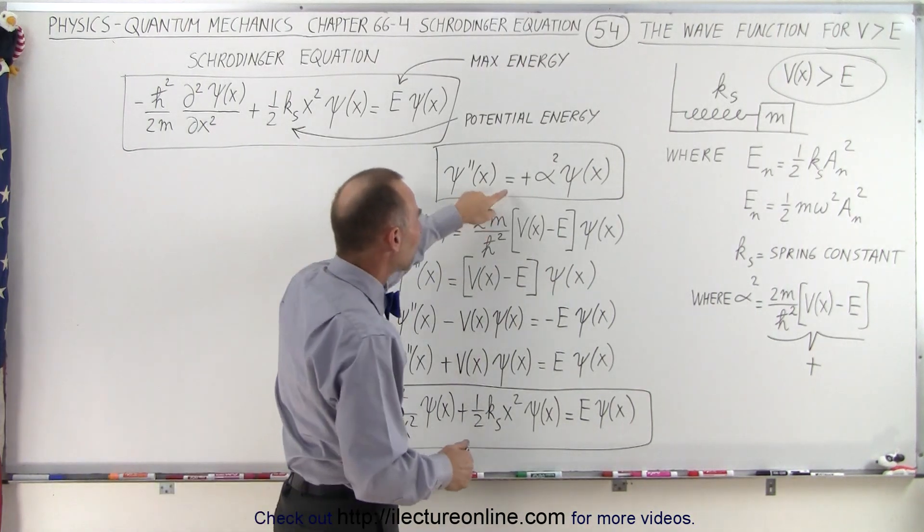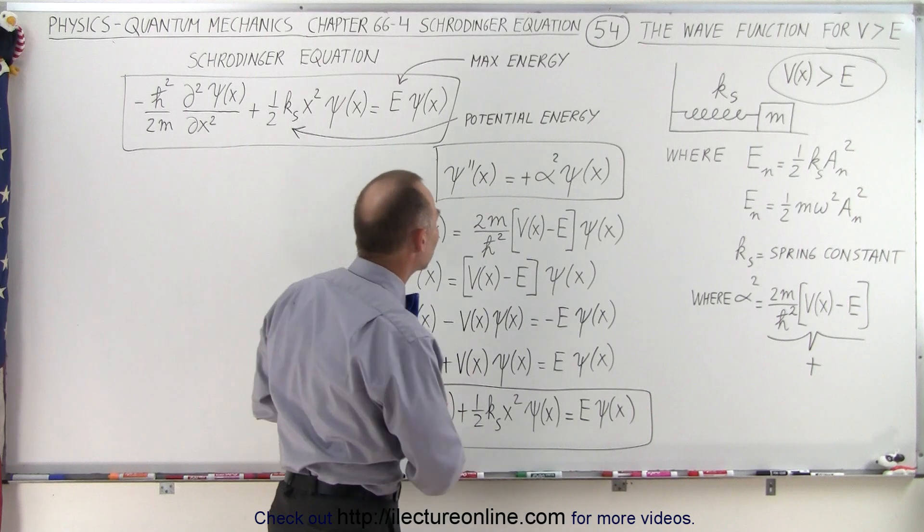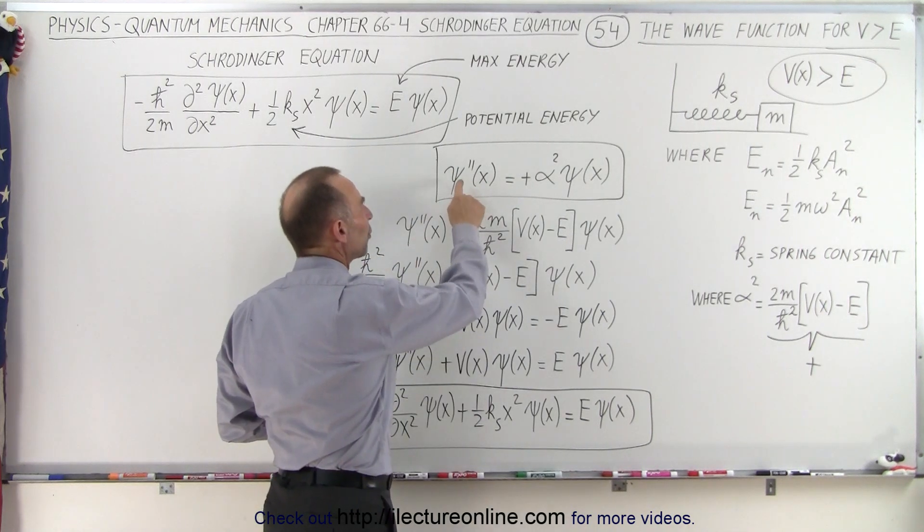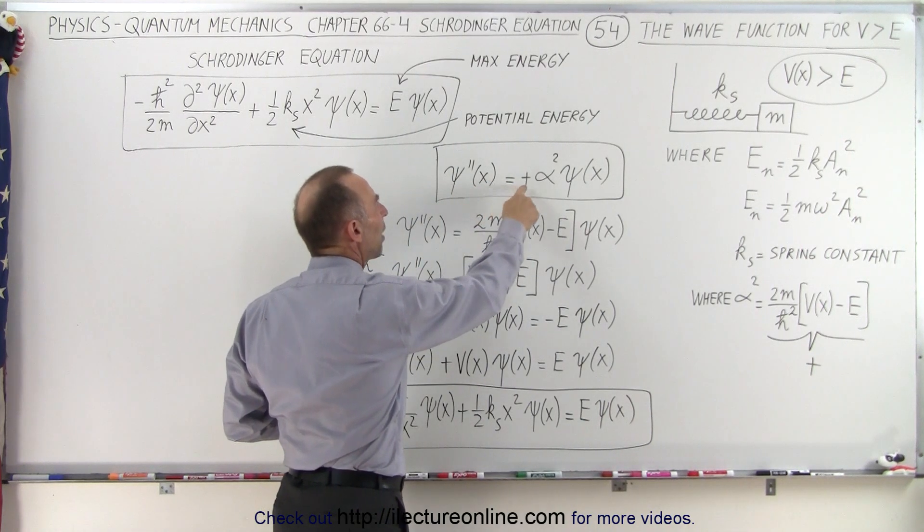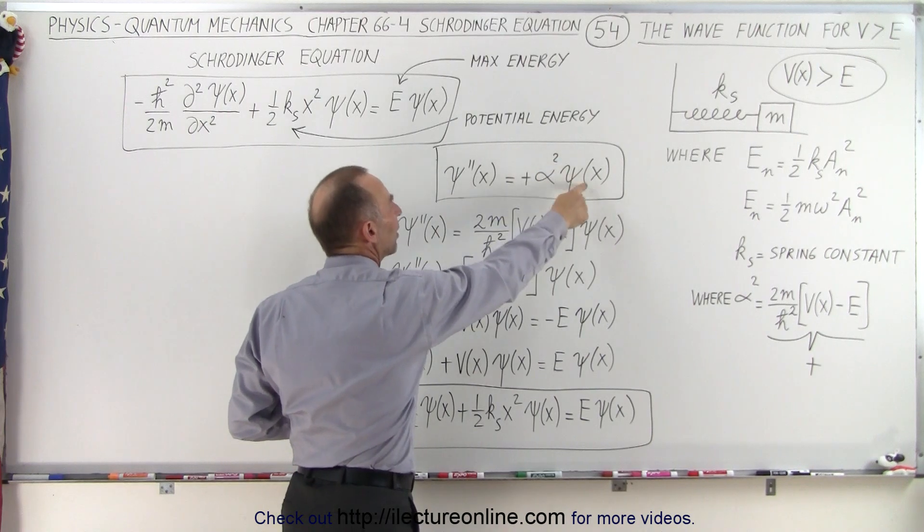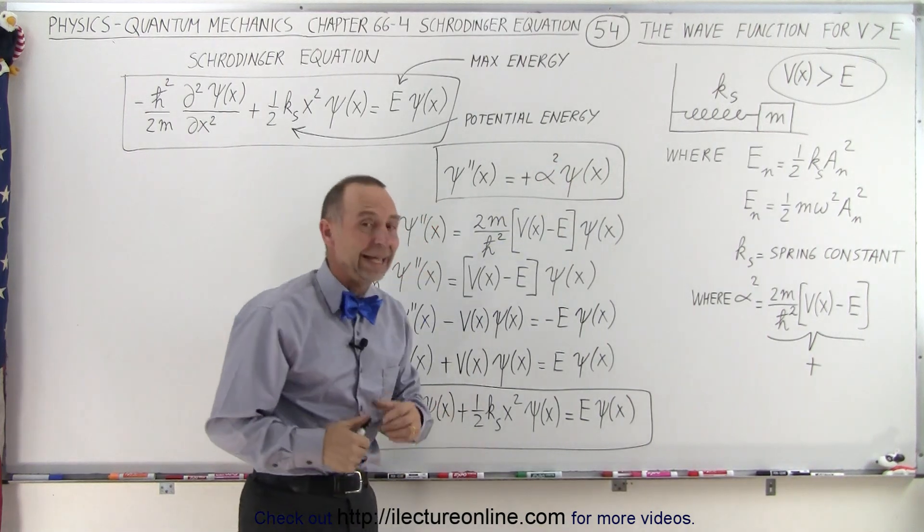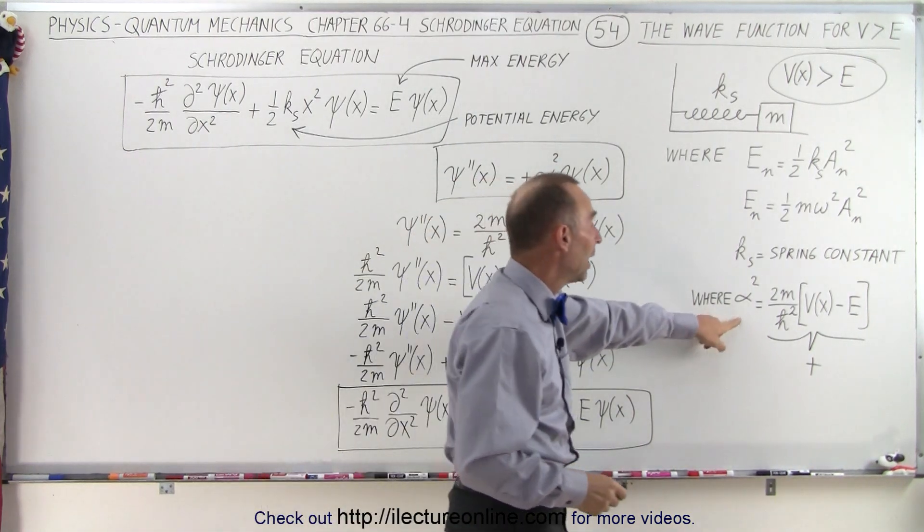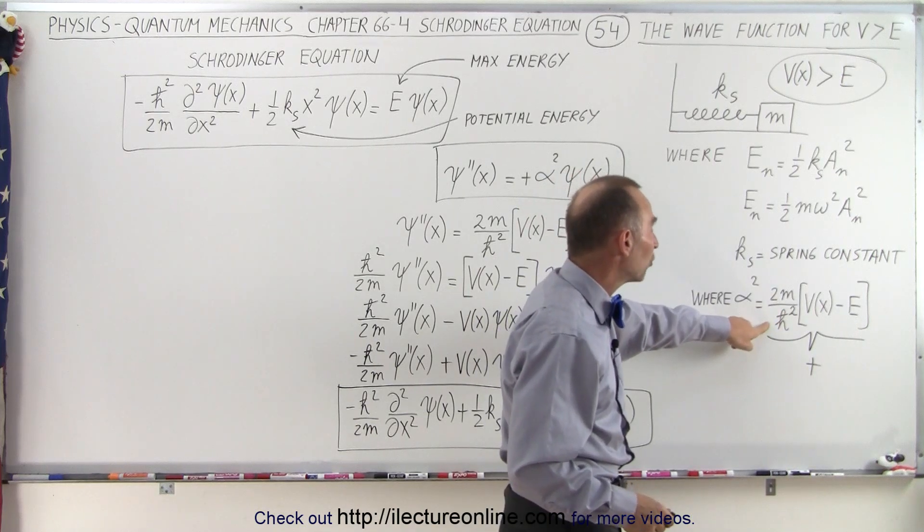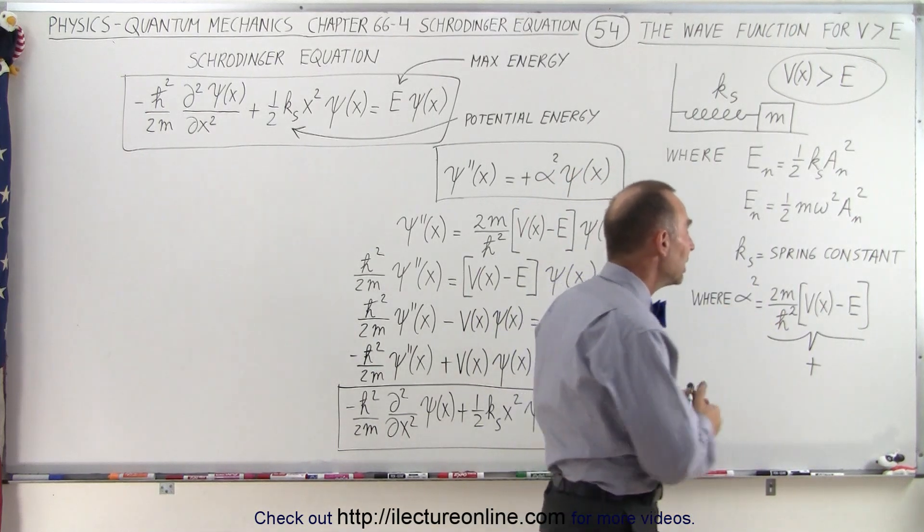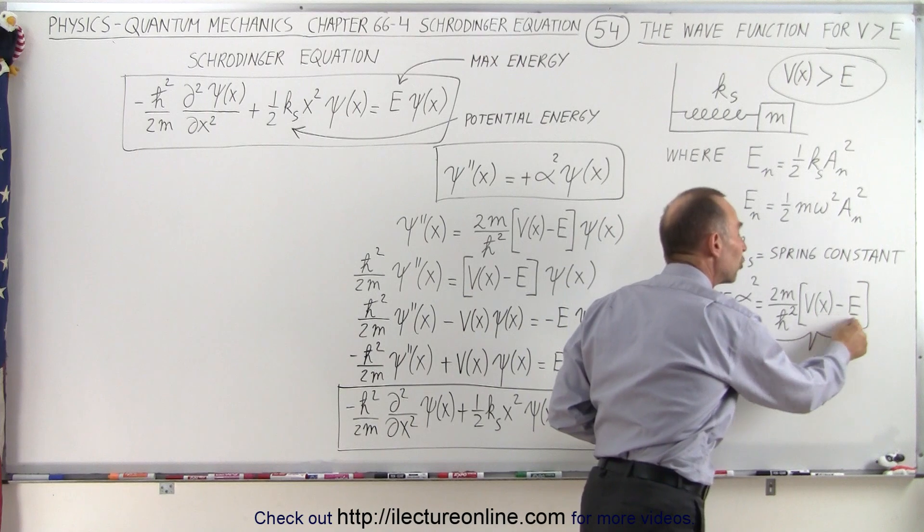Because when we go back to the simple form of the equation, notice that here we have the second derivative of the wave function is equal to the positive alpha squared times the wave function. And alpha squared is defined now as 2m over h bar squared times the quantity, the potential energy minus the total energy.